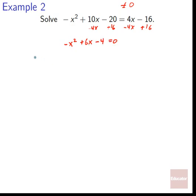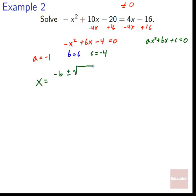From −x² + 6x − 4 = 0, we identify a = −1, b = 6, c = −4. We're in the standard format ax² + bx + c = 0. The roots are x = [−b ± √(b² − 4ac)] / (2a).